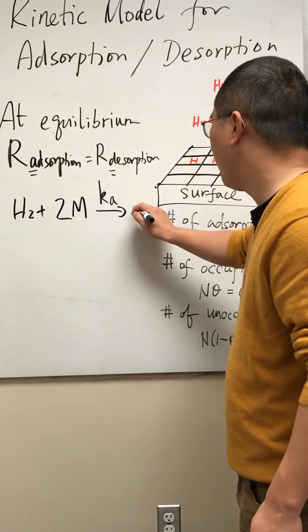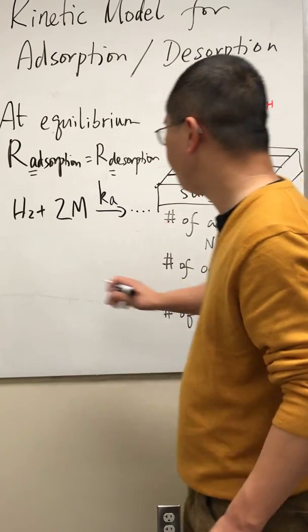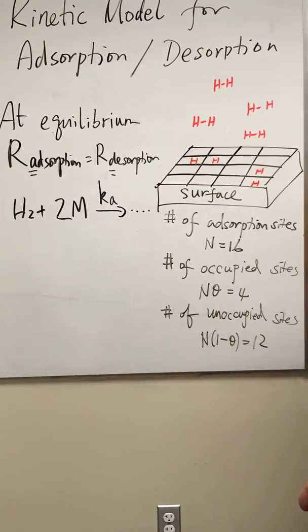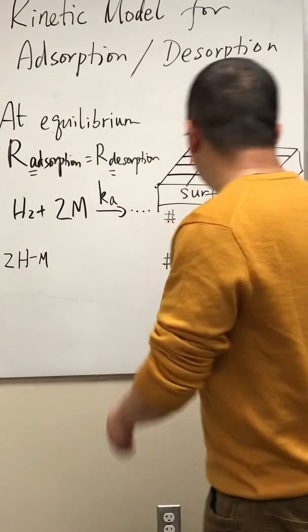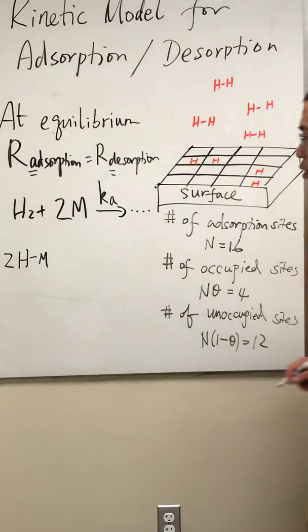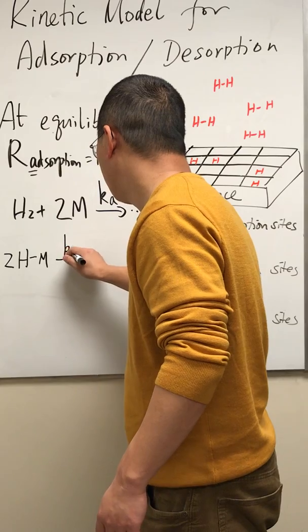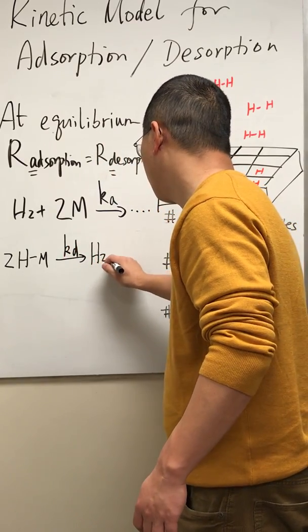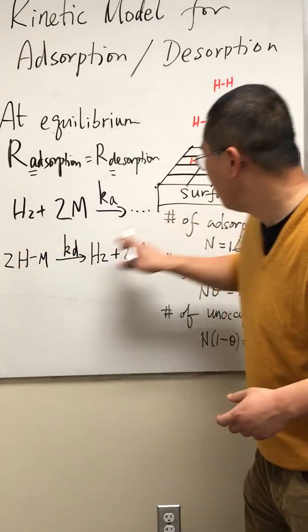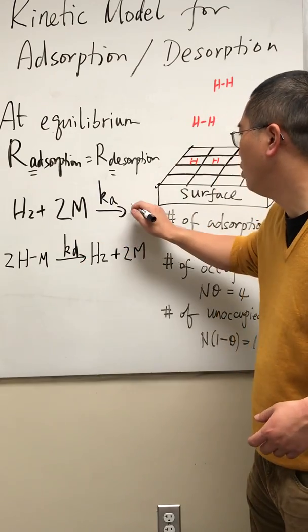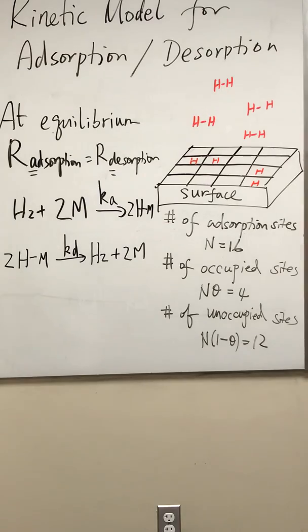And over here I'm going to just use dot dot dot. Let's look at desorption. The desorption is two hydrogen bonded to M, so one two three four, I have four of those in this picture. So this dot dot dot is simply just two hydrogen atoms bonded to the surface sites.